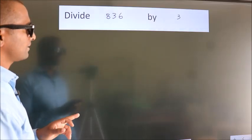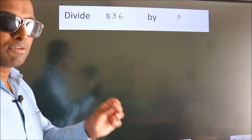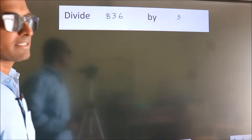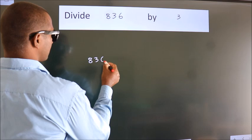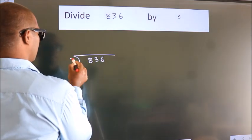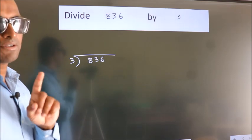Divide 836 by 3. To do this division, we should frame it in this way. 836 here, 3 here. This is your step 1.